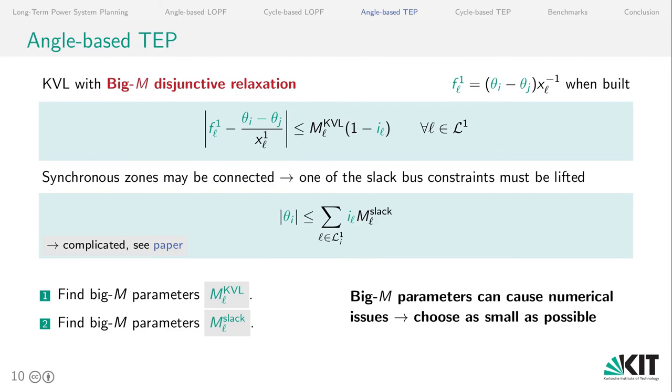Let's start again with the angle-based formulation. For Kirchhoff's voltage law, we use a big M disjunctive relaxation. And what we want to achieve by that is that we want our Kirchhoff voltage law constraints to hold whenever we invest in a particular line. We use a big parameter which renders the constraint inactive whenever we don't invest in the line. In this formulation, what we also have to worry about is that when we connect multiple synchronous zones, one of the slack bus constraints must be lifted. So each of the synchronous zones has its own slack bus, but if they become connected, then we have to lift one of them.